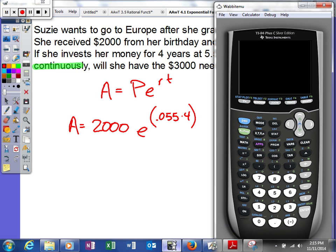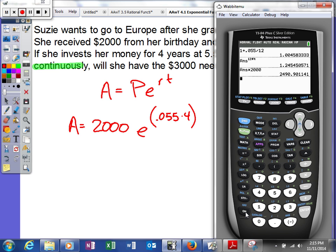And we'll get our trusty little calculator back up here. So we'll say E to the decimal 0.055 times 4 power. And then just hit enter, and it gives me that, and then we're going to multiply that by 2,000.